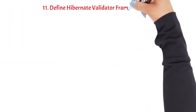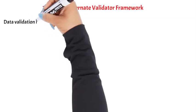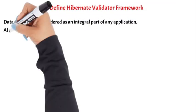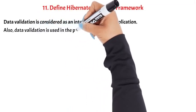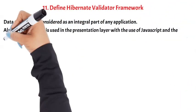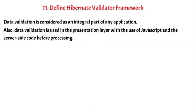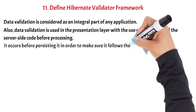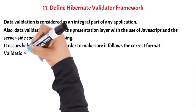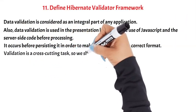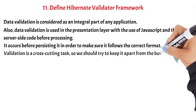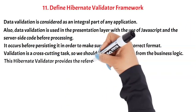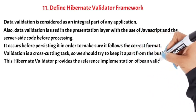Question 11: Define Hibernate Validator Framework. Data validation is considered an integral part of any application. Data validation is used in the presentation layer with the use of JavaScript and the server-side code before processing. It occurs before persisting data in order to make sure it follows the correct format. Validation is a cross-cutting task, so we should try to keep it apart from the business logic. The Hibernate Validator provides the reference implementation of the Bean Validation spec.